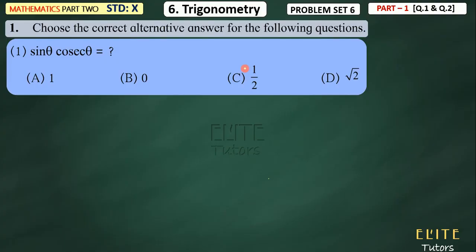Hello students, welcome back to Elite Tutors. In this video, we will start the problem set, chapter number 6, trigonometry, part 1. We will see question number 1 and question number 2, in which question number 1 is an alternative objective type and question number 2 is only one question in this video. So let's start.